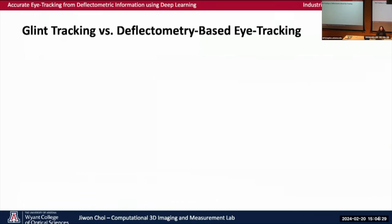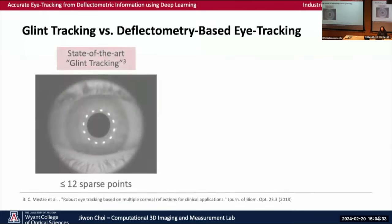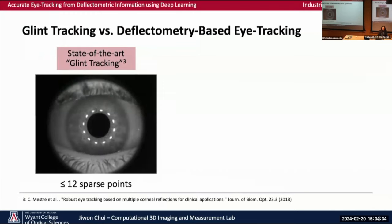Let's take a look at a state-of-the-art eye tracking method, which is called glint tracking. Here you illuminate point light sources on the cornea and look at the reflection of these. But the point light sources here are very sparse, usually less than 12 points.